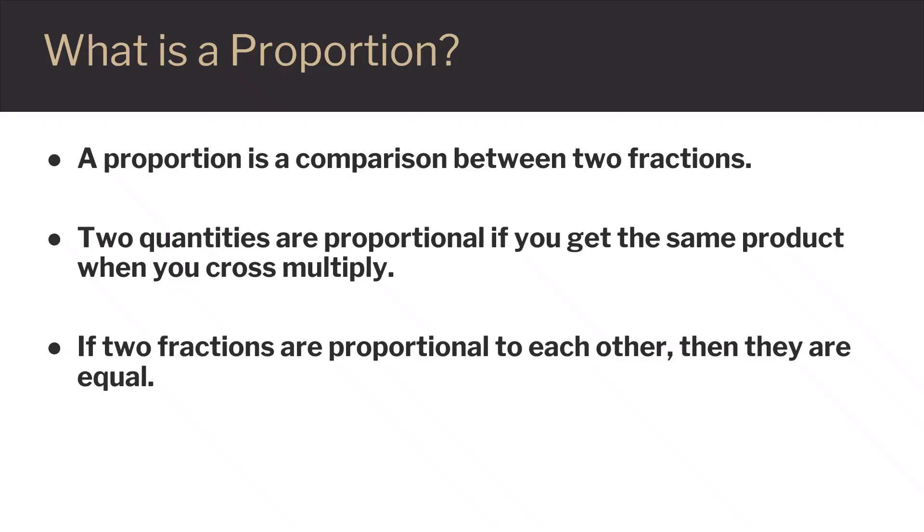A proportion is a comparison between two fractions. Two fractions are said to be proportional if you get the same number when you cross multiply. Another way to think about this is that two fractions are proportional to each other if they are equal.